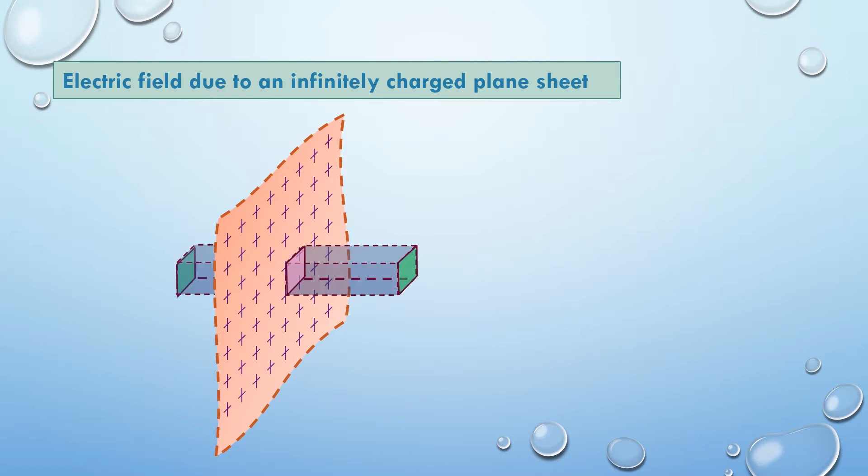Now we will imagine a pillbox or a rectangular body being placed inside the sheet where half part of it is on one side of the sheet and the other half is on the other part of the sheet. So this imaginary rectangular pillbox is going to act as a Gaussian surface for us.